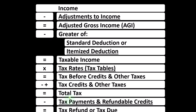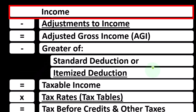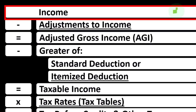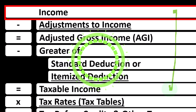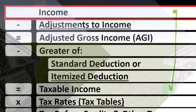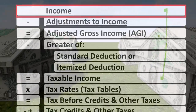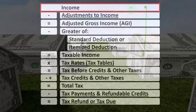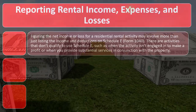Looking at the income tax formula, we're focused on line one income. The first half of the income tax formula is, in essence, an income statement — although just an outline, with other forms and schedules flowing into these line items. One of those is the Schedule E, which is in essence an income statement in and of itself, having rental income minus rental expenses, with the net rental income flowing into line one income of the income tax formula.